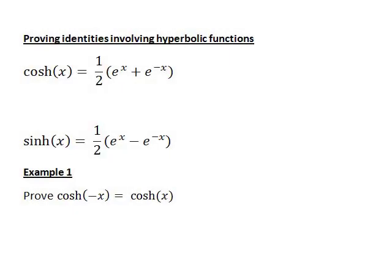In this recording we shall look at proving identities involving hyperbolic functions. The functions we shall look at are cosh x, which by definition is a half times e to the x plus e to the negative x, and sinh x equals a half times e to the x minus e to the negative x. To prove various hyperbolic identities it is often useful to use these two definitions.